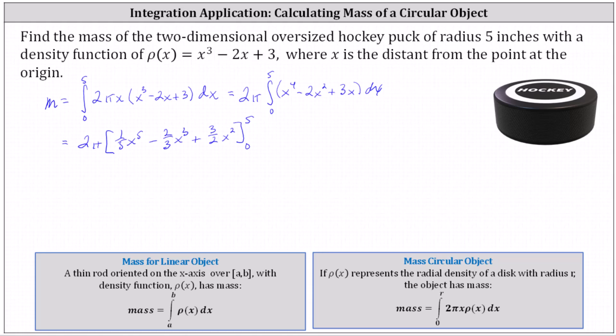Next, we determine 2π times the difference of F(5) and F(0). When x is five, we have (1/5)(5⁵) - (2/3)(5³) + (3/2)(5²).